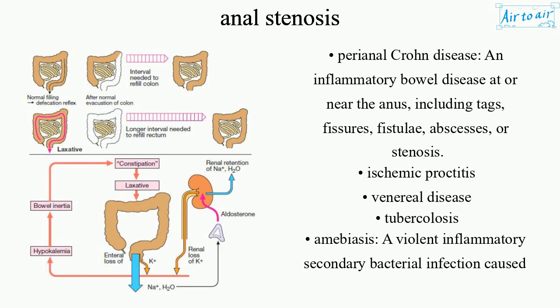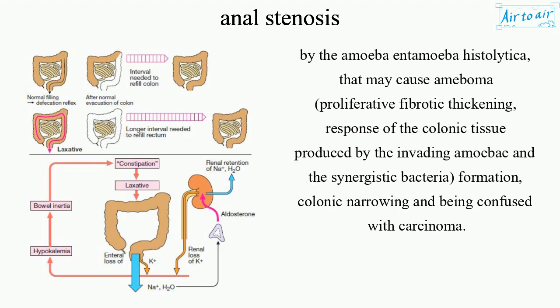Amoebiasis is a violent inflammatory secondary bacterial infection caused by the amoeba Entamoeba histolytica. It may cause amoeboma — a proliferative fibrotic thickening response of the colonic tissue produced by the invading amoeba and synergistic bacteria — leading to colonic narrowing that can be confused with carcinoma.